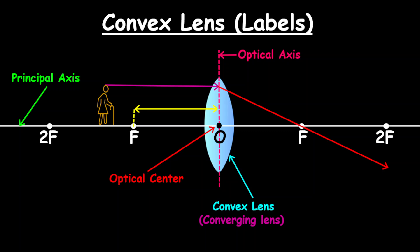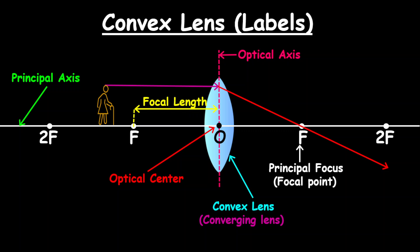Along the principal axis we have what we call the focal point or the principal focus. The principal focus is the point where all the refracted rays will pass through — remember that refracted rays come from parallel incident rays. We also have the focal length, which is the distance from the optical axis to the focal point. We also have the center of curvature, which is really 2F, and 2F is twice the distance of the focal length.